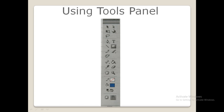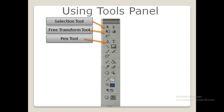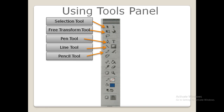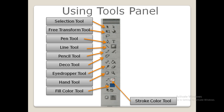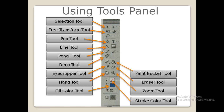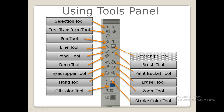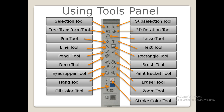Now let us see what is in the tools panel. We have the selection tool, free transform tool, pen tool, line tool, pencil tool, deco tool, eye dropper tool, hand tool, fill color tool, stroke color tool, zoom tool, eraser tool, paint bucket tool, brush tool, text tool, rectangle tool, lasso tool, 3D rotation tool, and sub-selection tool. We will study all these tools in detail.